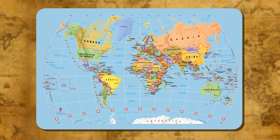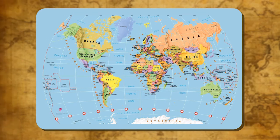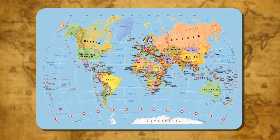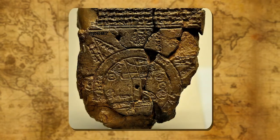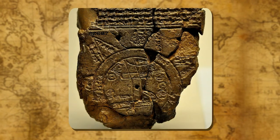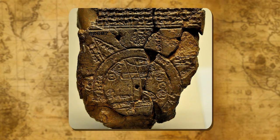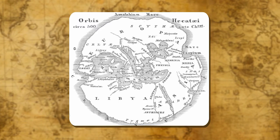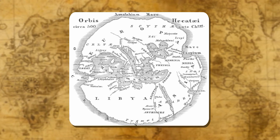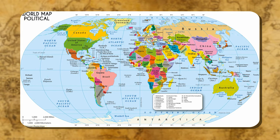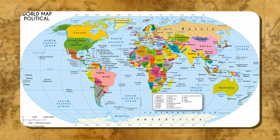A map is the representation of the earth's surface as a whole or a part of it on a plain surface drawn to some specific scale. Since the earliest civilization, we have been using maps. The first map was perhaps made by the Babylonians in 2300 BC on a clay tablet. The first map of the world was prepared by Anaximander (611–541 BC), a Greek philosopher. Nowadays, maps can be made with least amount of distortion at the poles through modern techniques.